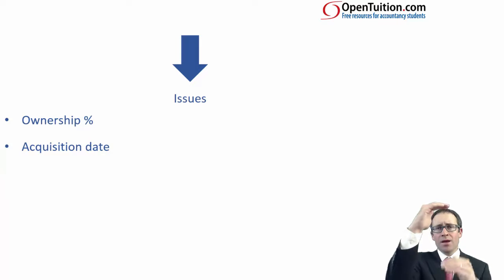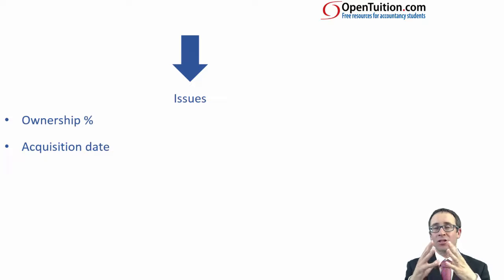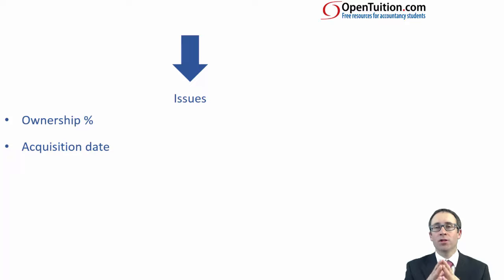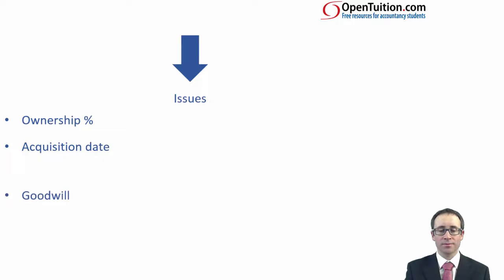That will also help us think about the acquisition date. P acquired S on a particular date — when did S acquire SS? This has implications for when the sub-subsidiary became part of the group, and it's from that point that we begin to consolidate it. So it's important to understand the acquisition date.